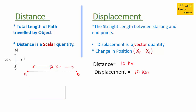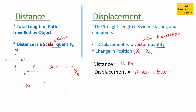Displacement is a vector quantity — it includes value plus direction of motion. The person is traveling to point B, so the direction is towards B, which is east. So displacement includes direction also, and the direction is east. This is the difference between distance and displacement: distance is a scalar quantity and only shows the value of the length, while displacement shows value plus direction of motion.